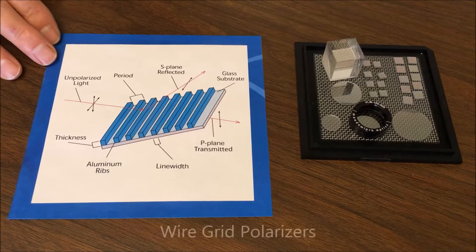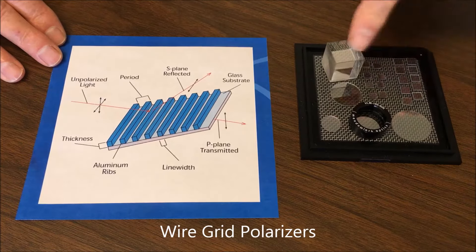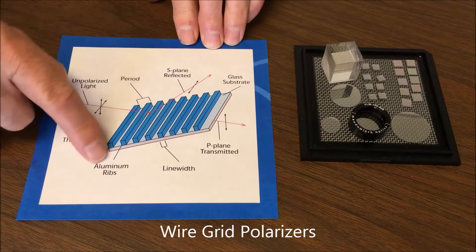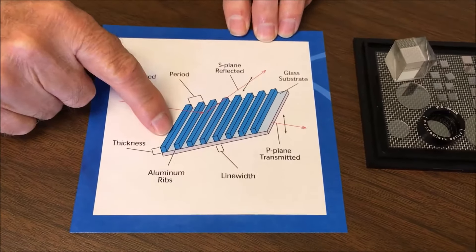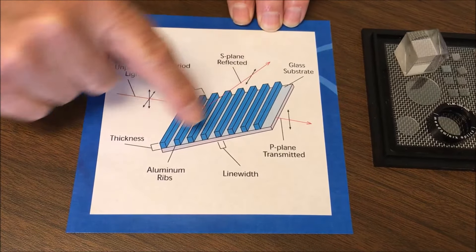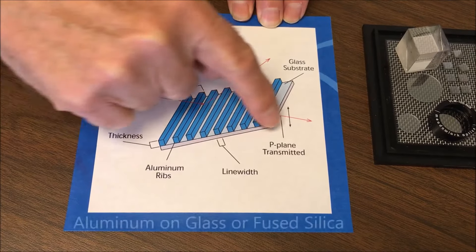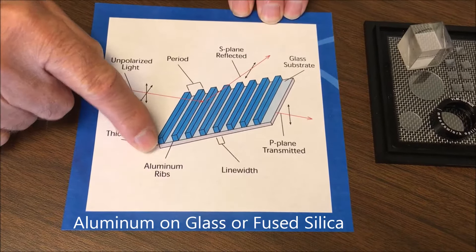We're going to talk a little bit about the principle of how wire grid polarizers work. These are some examples of wire grids, and this is a diagram that shows the structure of these aluminum wires, which are typically on a glass or fused silica substrate.